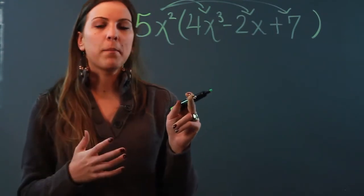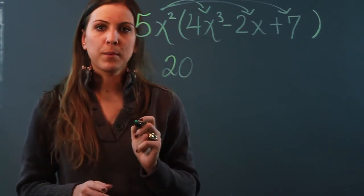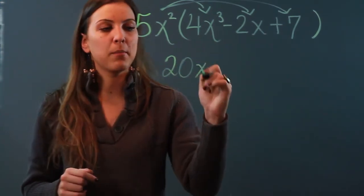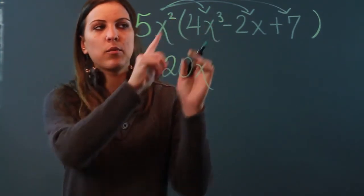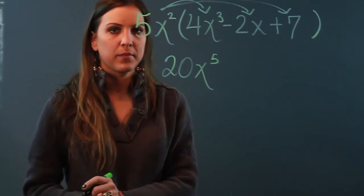I start by multiplying the coefficients. 5 times 4 is 20. Now I use my multiplication law of exponents. If my bases are the same, they are, I keep the base and I add the exponents. 2 plus 3 is 5. So my first term is 20x to the 5th.